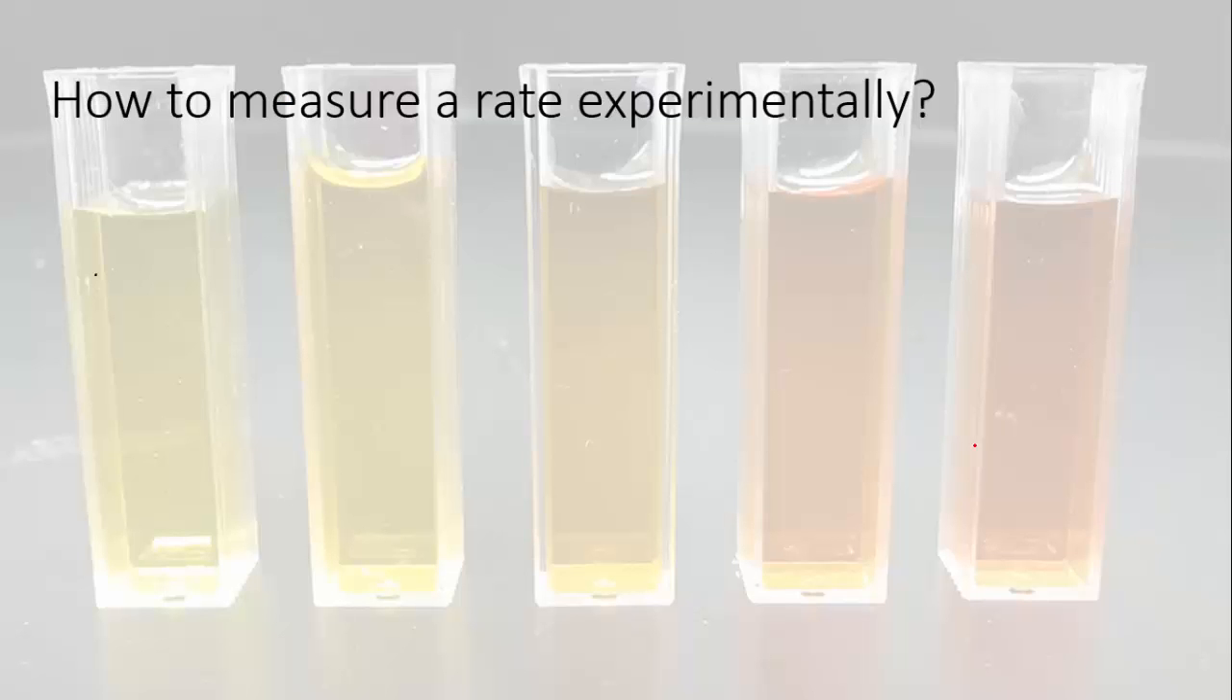Third, since we need to measure rates experimentally, we'd better have some experimental ways of doing it. We want to know how fast a reactant is being used up or a product is being produced. So we need some way of detecting amounts of these chemicals at different points in the reaction. Here are some common ways of doing it.